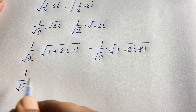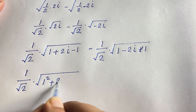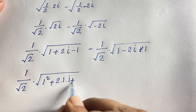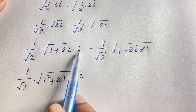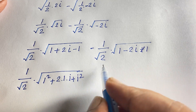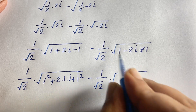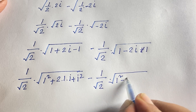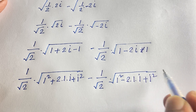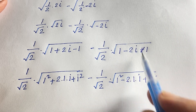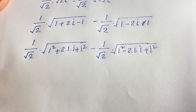Now I recognize: (1 + 2i − 1) = 1² + 2(1)(i) + i², which uses the fact that i² = −1. So this becomes (1 + i)². Similarly, (1 − 2i − 1) = 1² − 2(1)(i) + i², and since i² = −1 this expression equals (1 − i)².